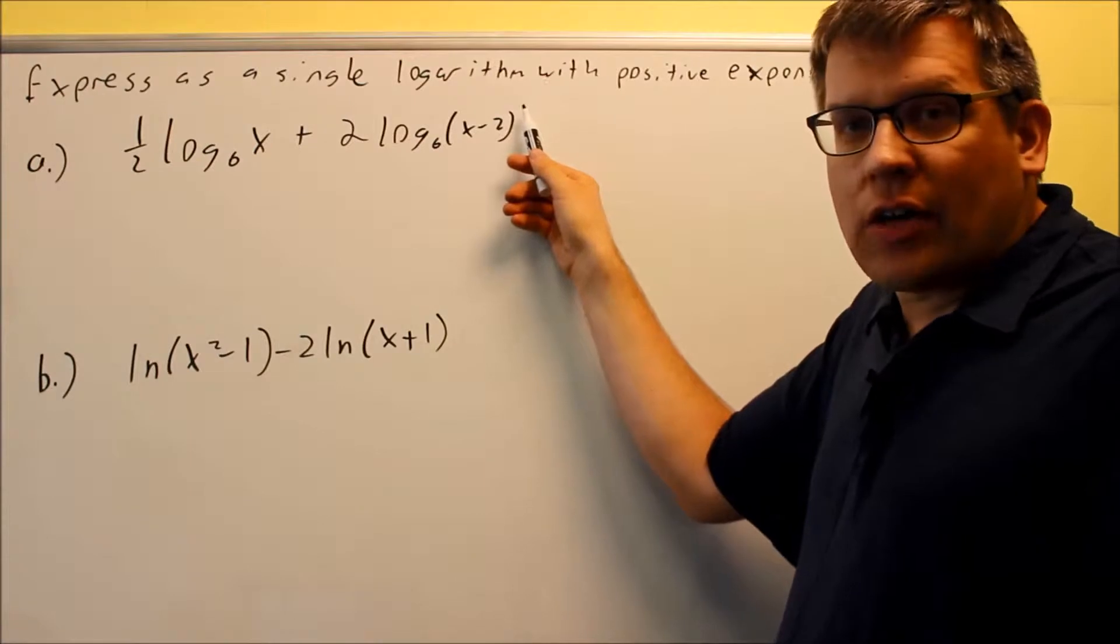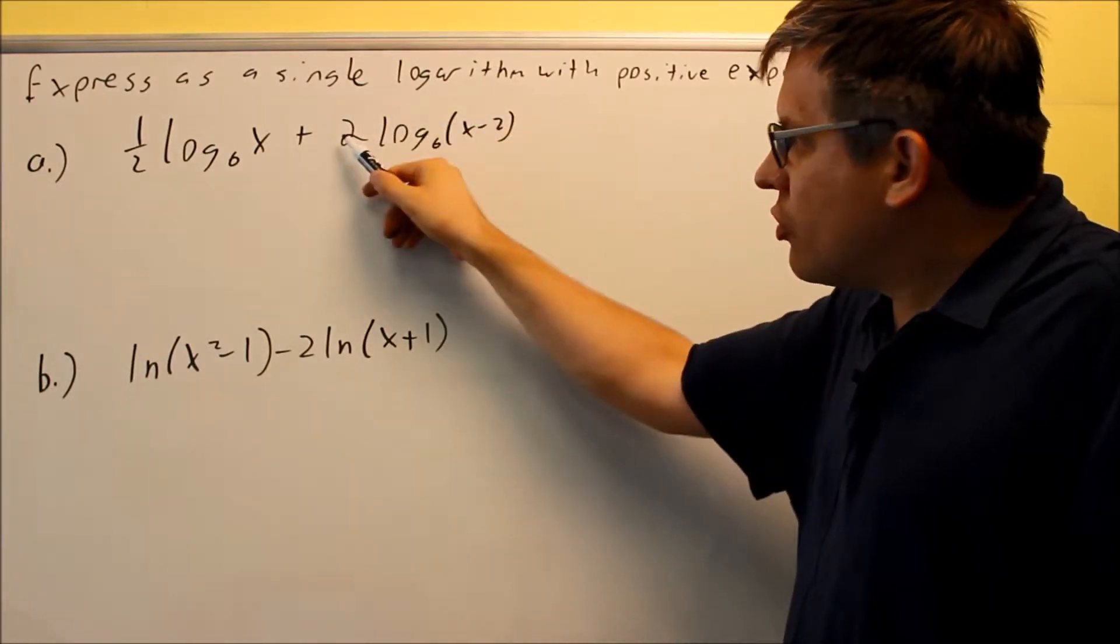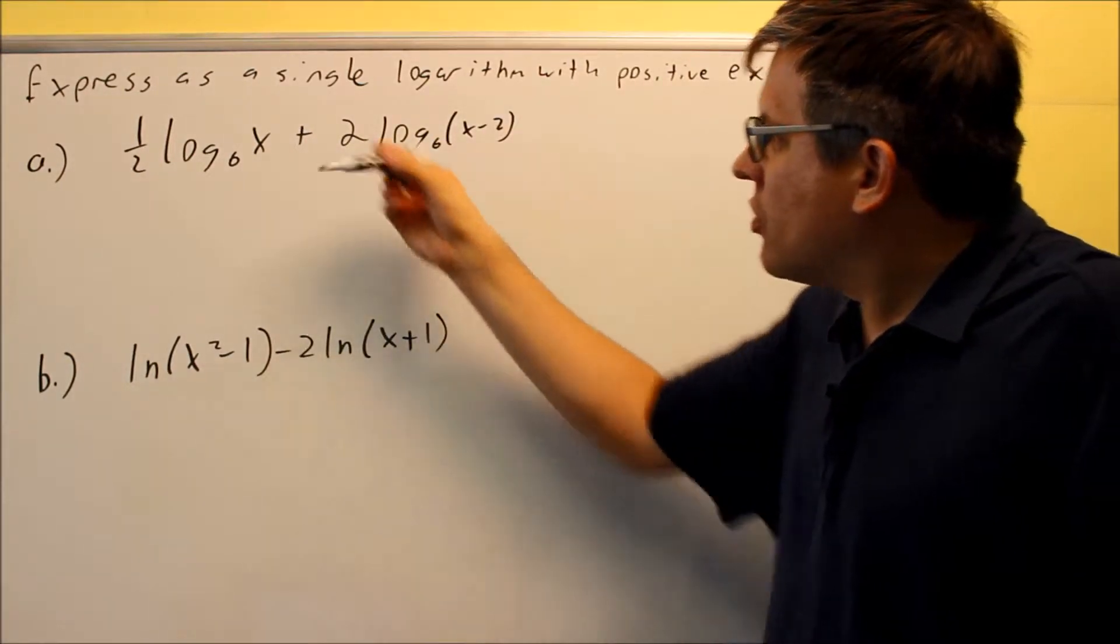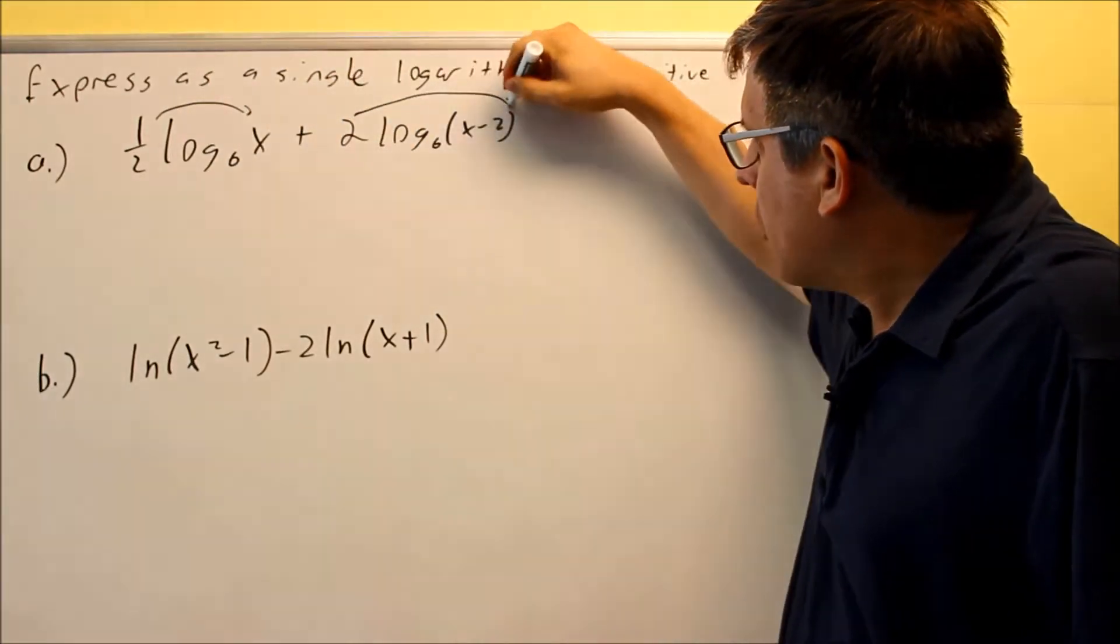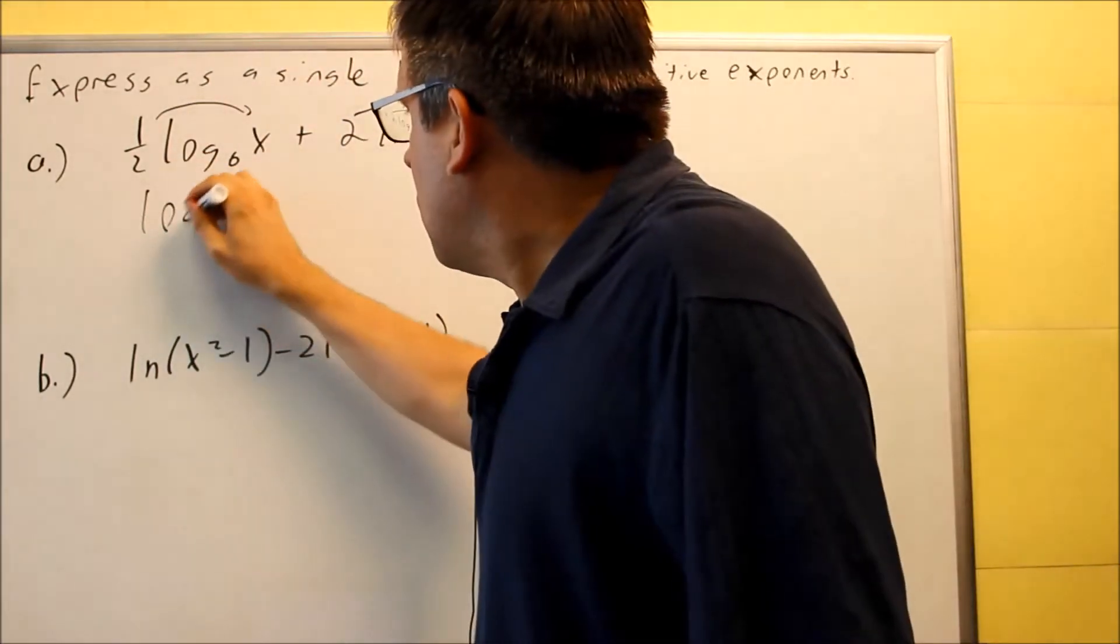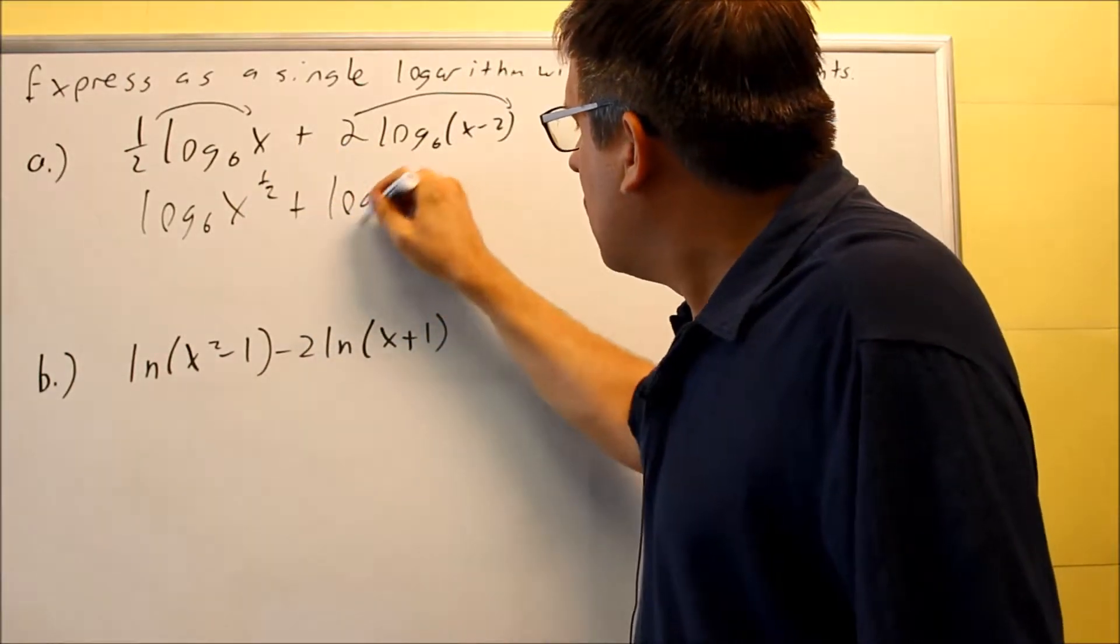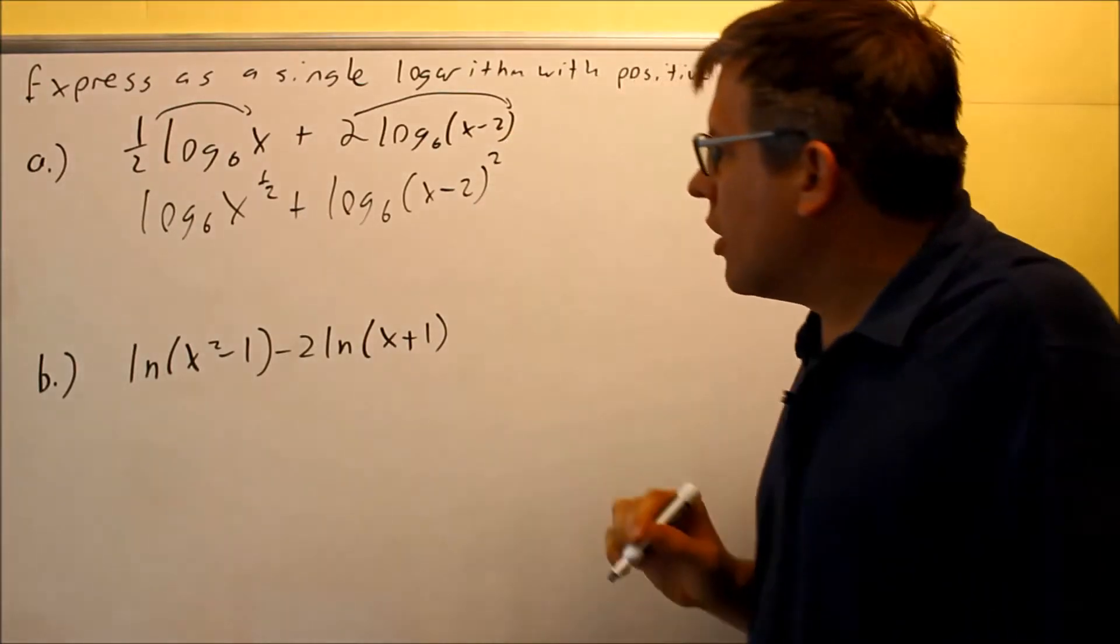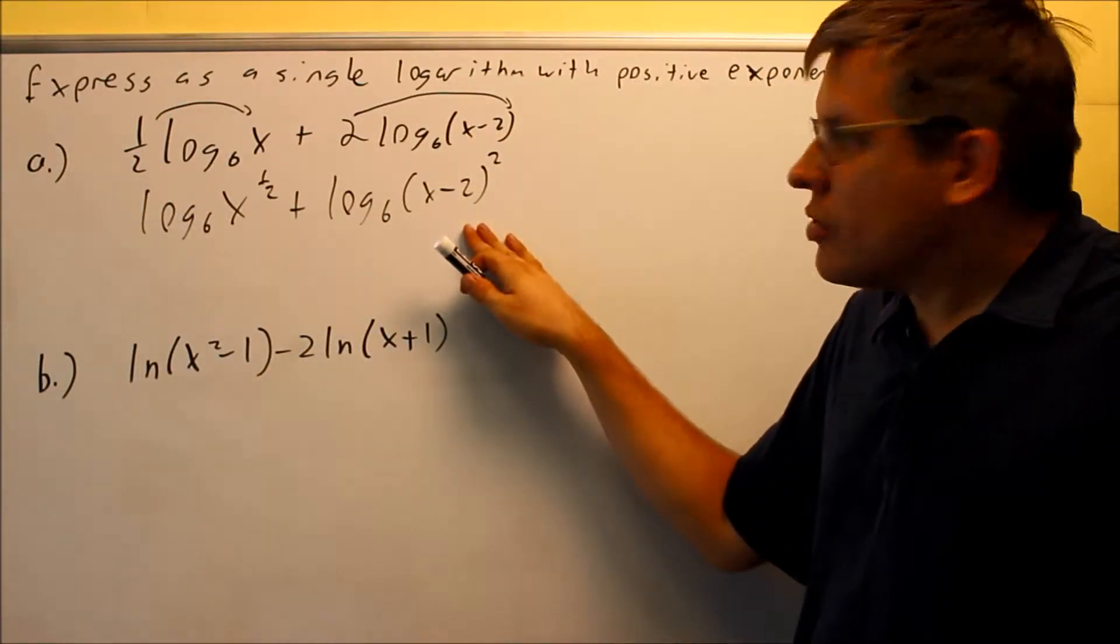So that rule says that, rule number 5 for property log says that we can take that two, you can do both ways of it, bring it down, bring it up, it doesn't really matter. So what I'm going to do first is these two powers, both of them, I'm going to bring them up to start with first. So I'm going to get log 6x to the 1 half, and then plus log 6x minus 2, that's going to be squared. So I'm bringing these powers up, that's the very first step that I'm going to do is to do that.